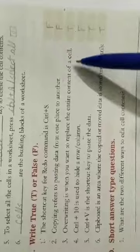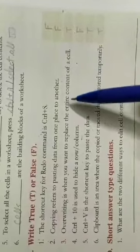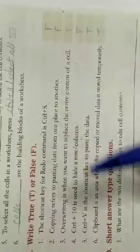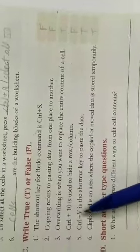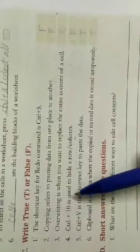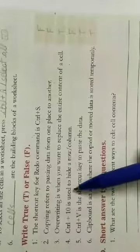content of a cell. This is true. If you want to edit the entire or change the entire content of a cell, you can use the overwriting method. Now fourth one: Control plus 10 is used to hide a row or column. This one is false because Control plus 9 is used to hide a row or